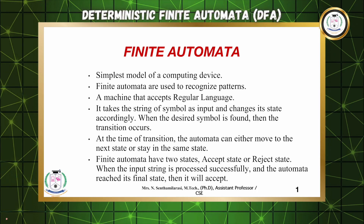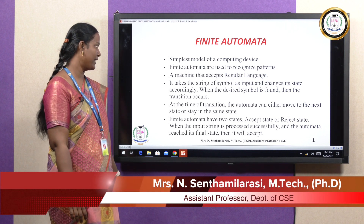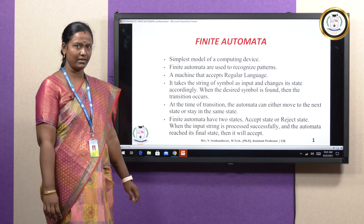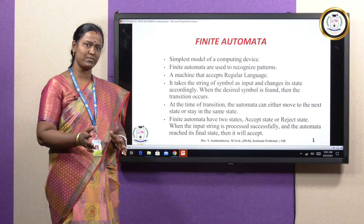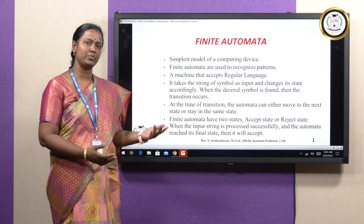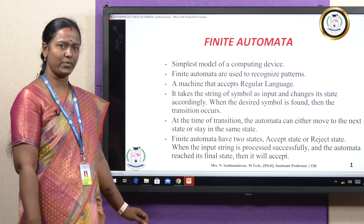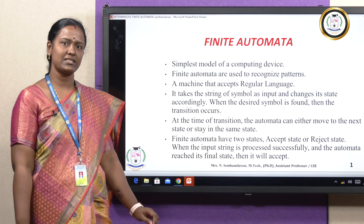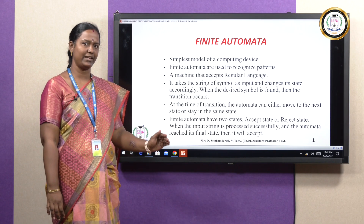What is meant by finite automata? Finite automata is the simplest model of a computing device. It is used to recognize patterns and accepts the regular language. For a single input it moves from one state to another state — it can be the same state or a different state. That movement is called a transition. If the input given is satisfied, it moves to the final state.